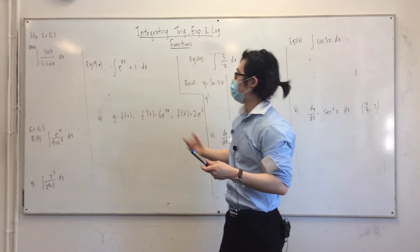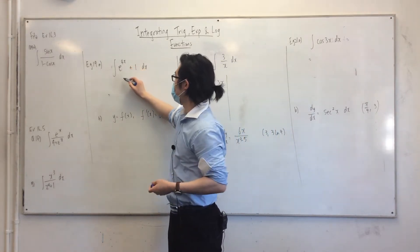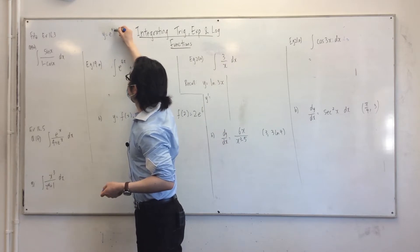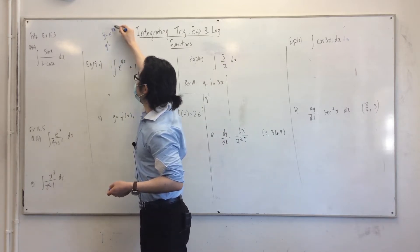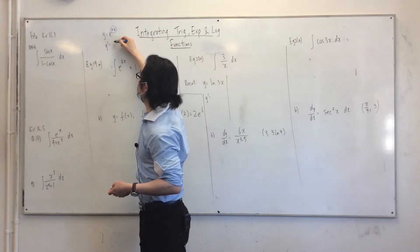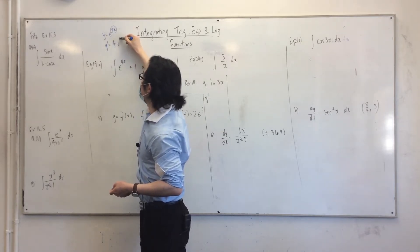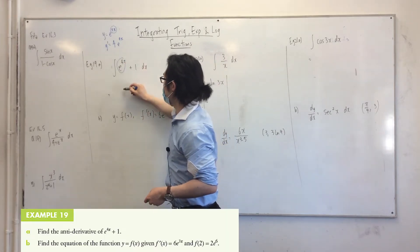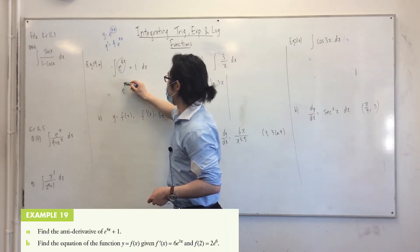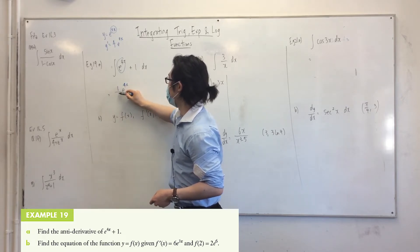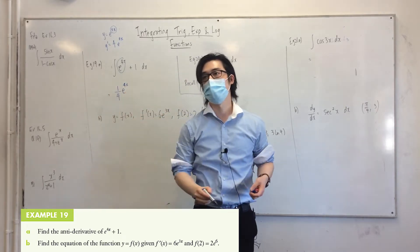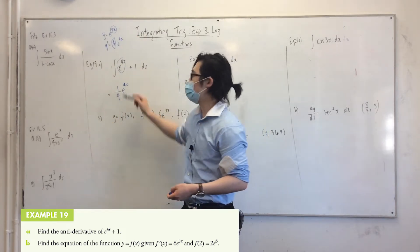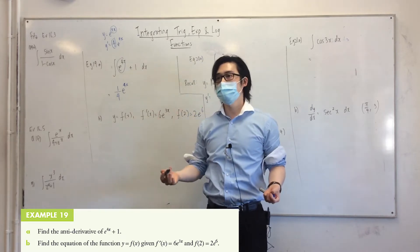Alright, so basically how you integrate exponential functions is - if we had this and I differentiate it, you know how the differentiation of the power comes down, which is four, and then the original's kept the same, right? With integration, the original's kept the same, but you always put it under one with a differentiation of the power. So when you differentiate it comes down; when you integrate it, you put it under one. That's all it is. Okay?